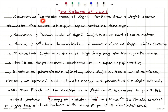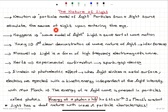Newton has a particle model of light. Particles from a light source stimulate the sense of sight upon entering the eye. You can imagine that the light source produces light particles and they hit the eye and stimulate the sense of sight. That was Newton's explanation.